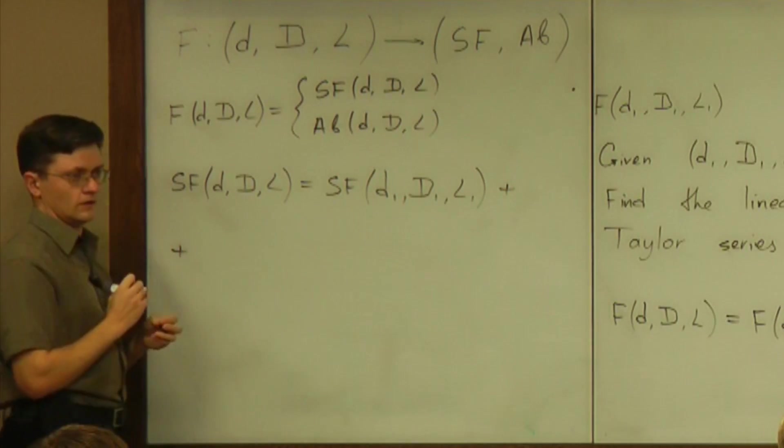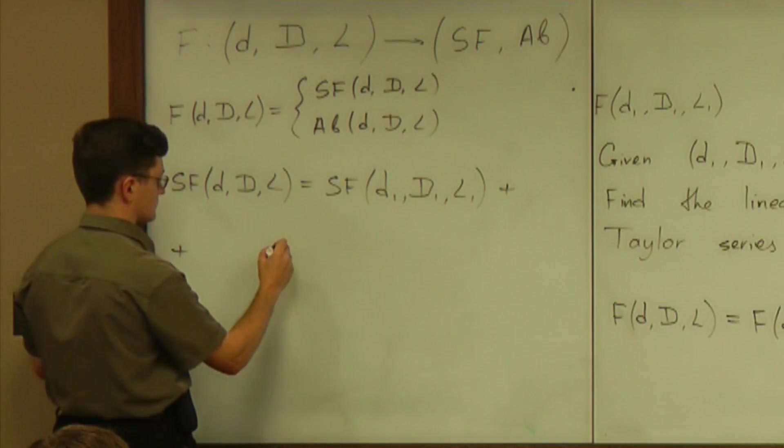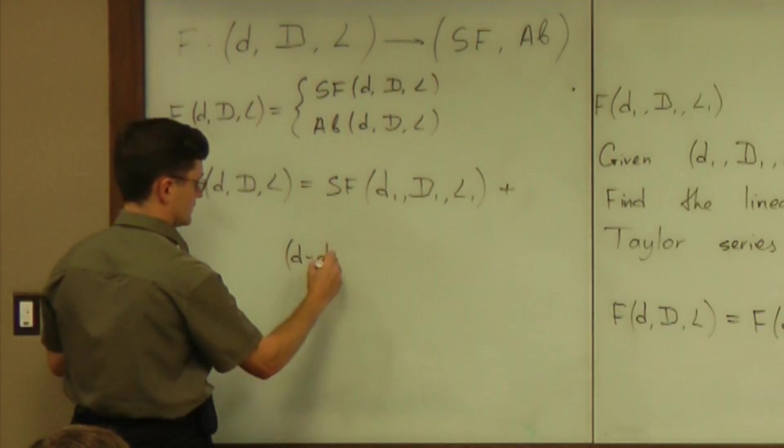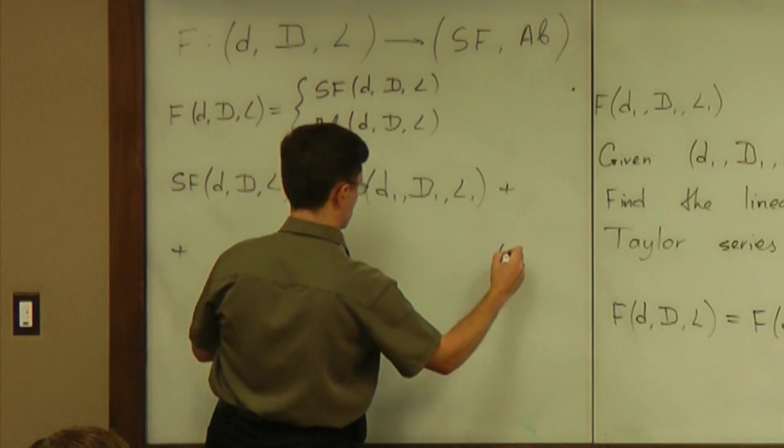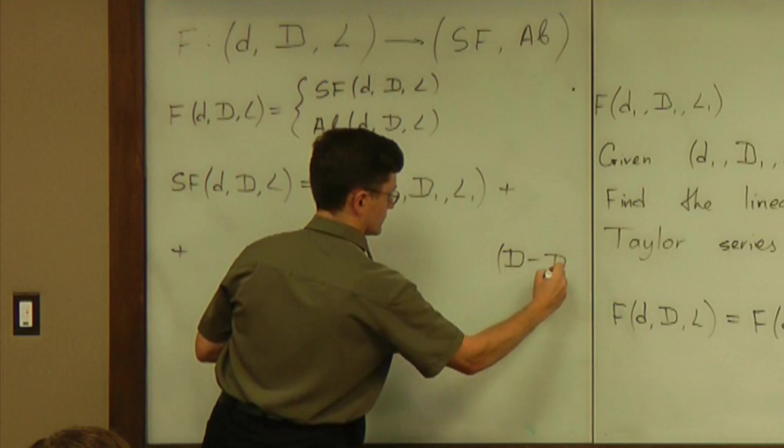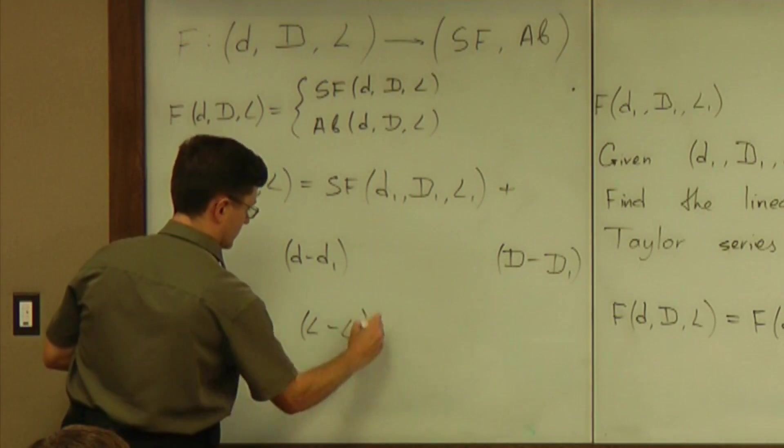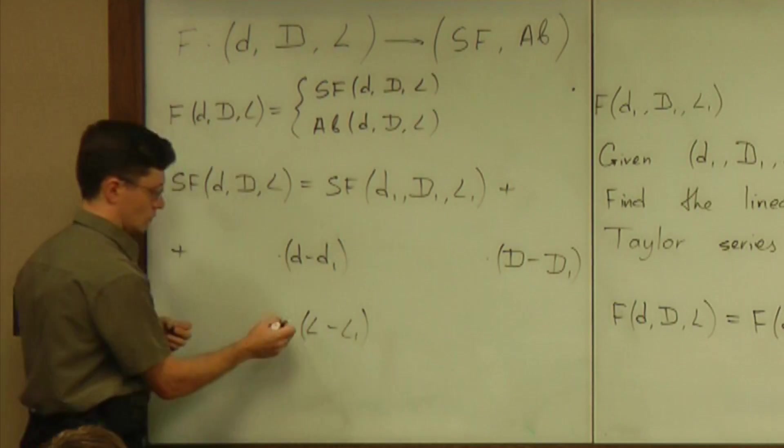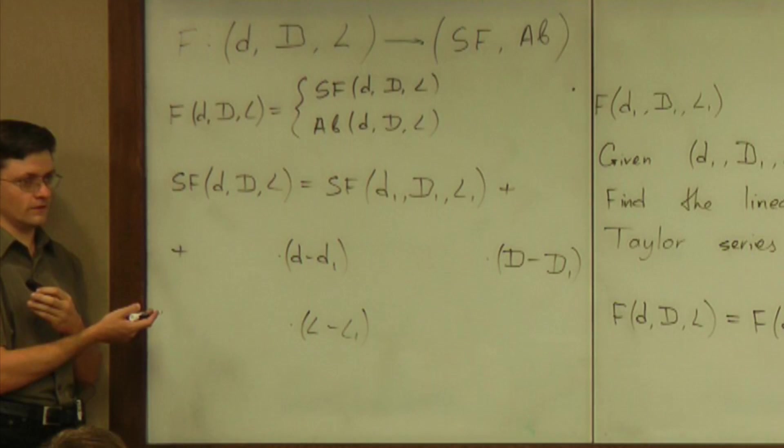Plus something about the differences. D minus D1, and then capital D minus capital D1, and finally L minus L1. So those must be in degree one. So they have to have some coefficients. Partial derivatives.